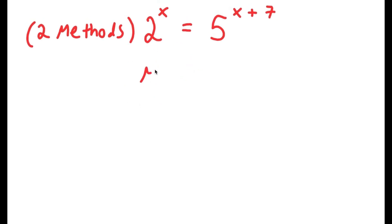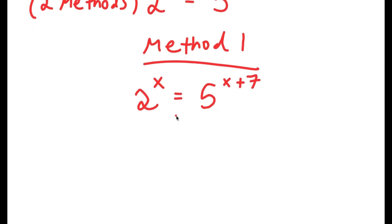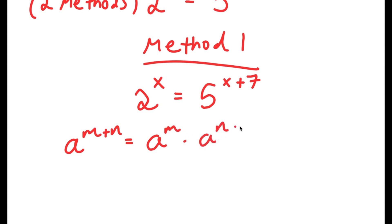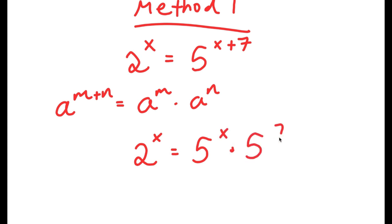So for method 1, I'm going to write the problem: 2 to the power of x is equal to 5 to the power of x plus 7. If I have something in the form a to the power of m plus n, this is equal to a to the power of m times a to the power of n. So 5 to the power of x plus 7, I can write that as 5 to the power of x times 5 to the power of 7.